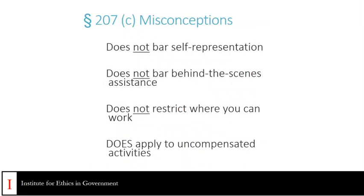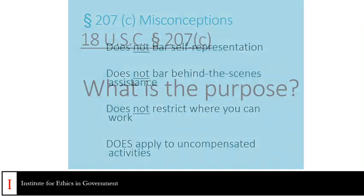207C, as is the case with A1 and A2, does not bar self-representation. It does not bar behind-the-scenes assistance. It does not restrict where you can work. But it does apply to uncompensated activities as well as compensated activities.